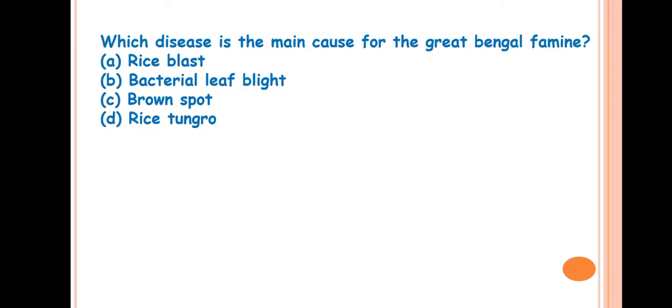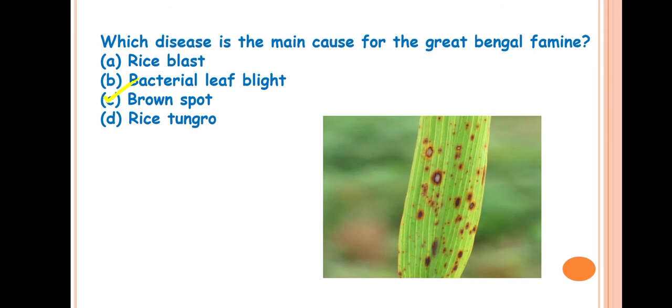Next question is, which disease is the main cause of the Great Bengal famine? The answer is C, brown spot. It is also known as Helminthosporiosis or Sesame spot. The causal organism is Drechslera oryzae. Previously, it was called Helminthosporium oryzae.